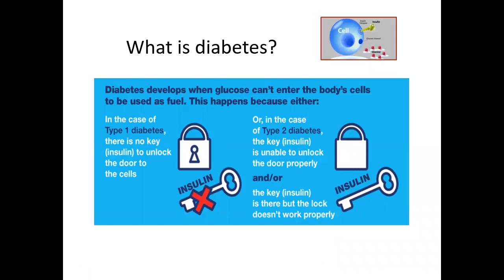Diabetes develops because glucose remains in the circulation, causing hyperglycemia. Think of diabetes as a key-and-lock situation. The normal body cell has glucose channels or pores on its surface. In the presence of insulin, this channel or door lock opens and allows glucose to enter the body cell to be used as fuel for metabolic activity.